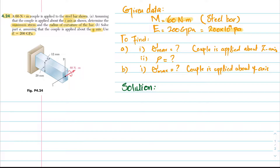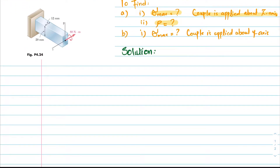In part A, we have been asked to find the maximum stress and radius of curvature for the couple applied about the Z axis. You can see that this is the Z axis and the couple of 60 N·m is applied about it. As we know, maximum stress sigma_max is equal to M times c divided by I, where M is the applied bending moment, c is the distance from the neutral axis to the topmost fiber, and I is the moment of inertia.